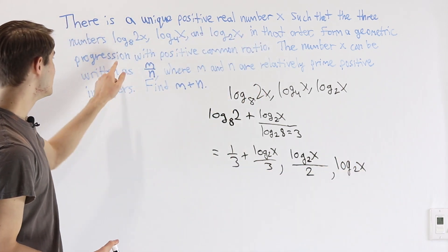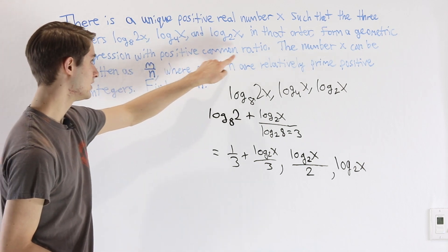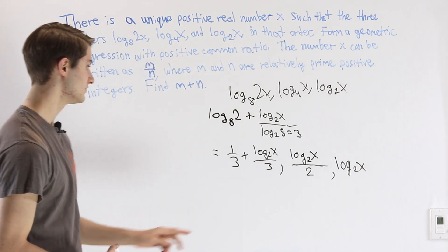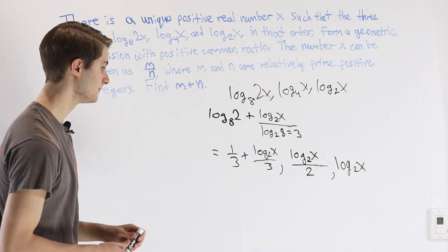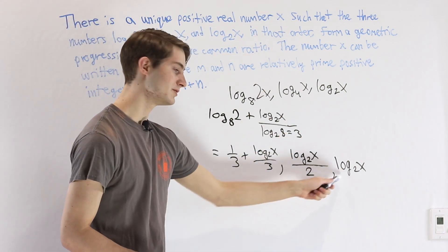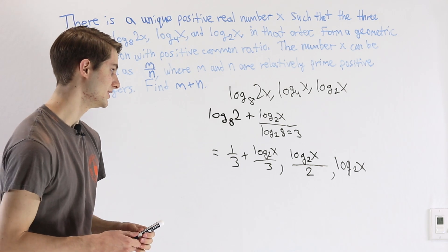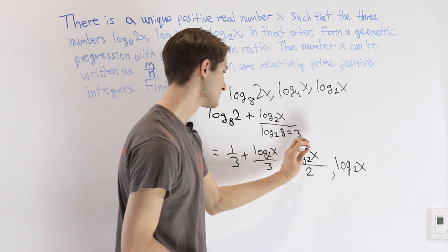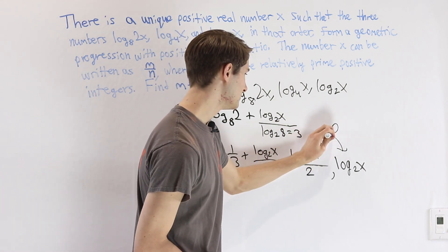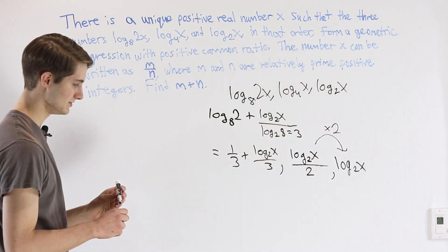Now we know that this is a geometric progression with positive common ratio, which means that each of these terms is a constant multiple of the last one. We can see pretty clearly from these last two what that common ratio is. If we went from log base 2 of x over 2 to log base 2 of x, then pretty clearly we must have multiplied by 2 to do that.